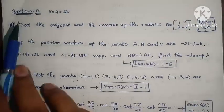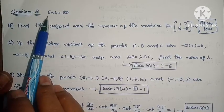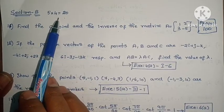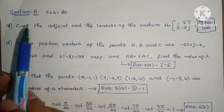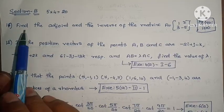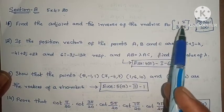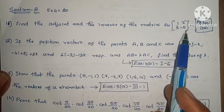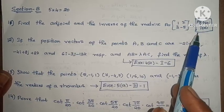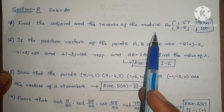Next, students, in Section B there are 7 problems. You have to answer 5 problems, each worth 4 marks, for a total of 20 marks. Question 11: Find the adjoint and the inverse of the matrix A equals [1, 2, 3, -5]. Page 100, example problem. Small problem, but 4 marks is enough.